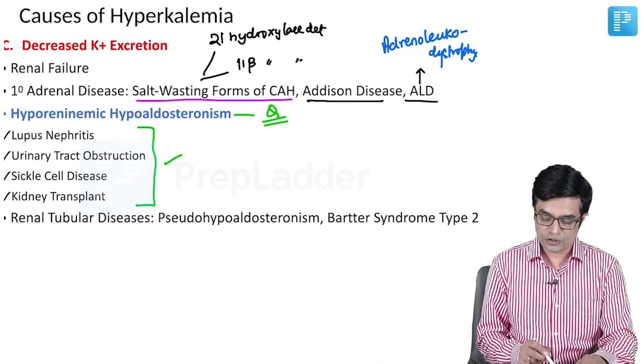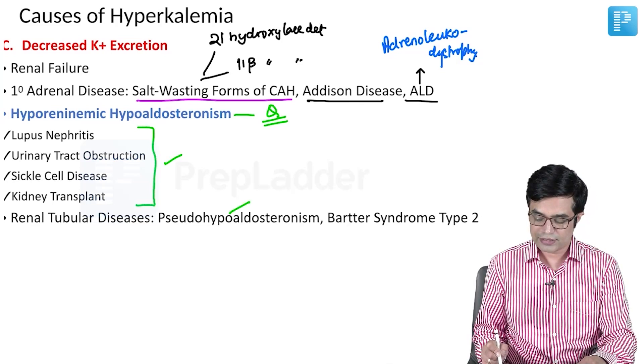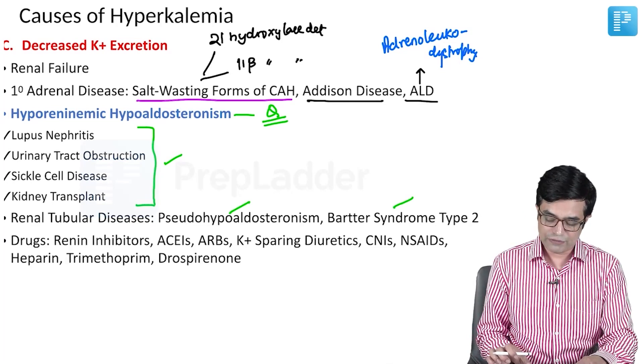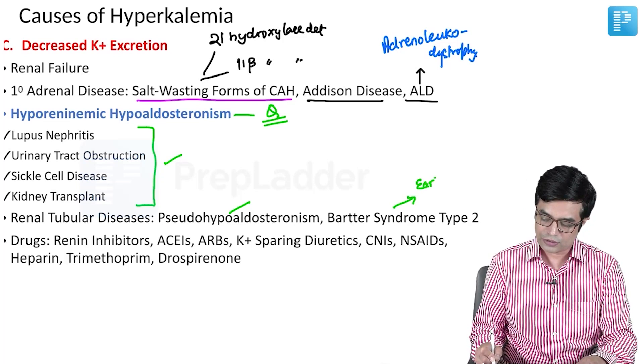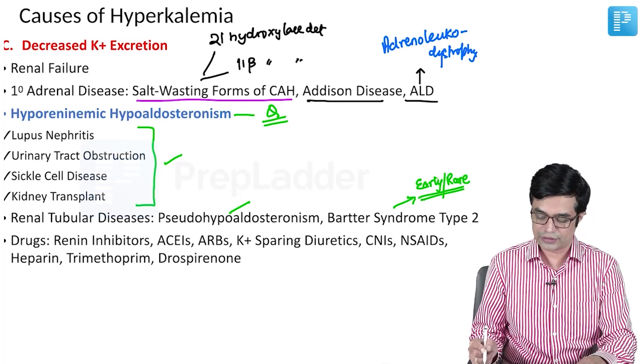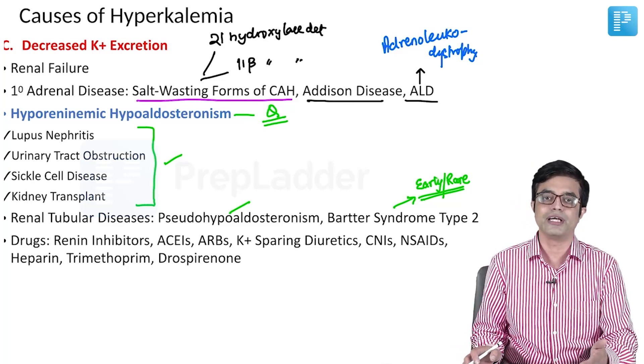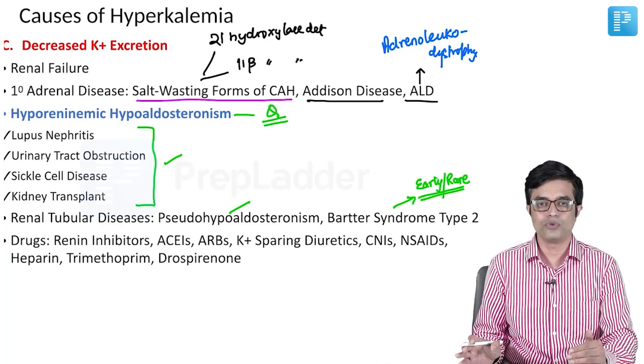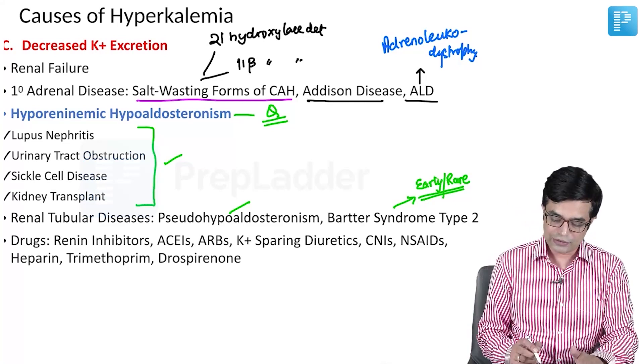We have renal tubular disease that can cause hyperkalemia which includes pseudohypoaldosteronism, Bartter syndrome type 2. Bartter syndrome type 2 only, the early onset parts or the rare forms can cause this. Usually, Bartter syndrome in general tends to produce hypokalemia, but there is one form, type 2, which can sometimes produce hyperkalemia in the early forms or acute stress form.